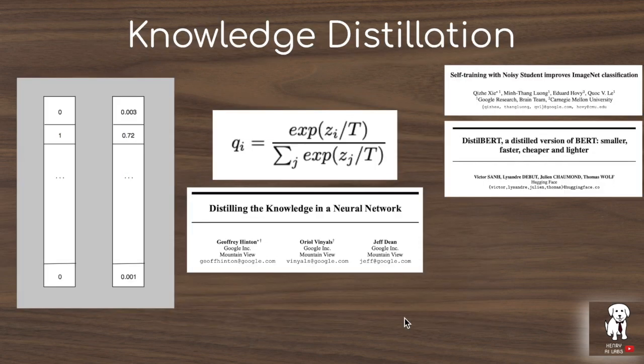Knowledge distillation is used to transfer the knowledge from a teacher network into a student network. Usually this is used in the setting of model compression, like distilled BERT, where you have a massive neural network like the BERT model with large transformer decoder block layers, and then you transfer the knowledge into a smaller capacity model. The benefit is faster inference time, lower storage costs, lower training costs, and other benefits of having smaller neural networks.